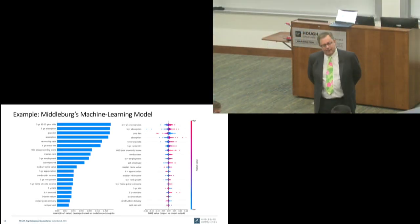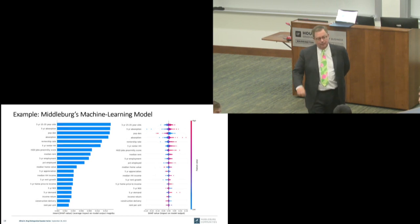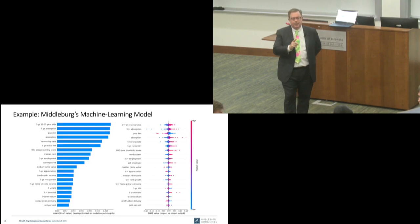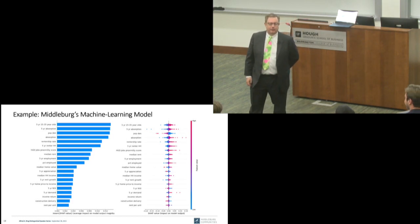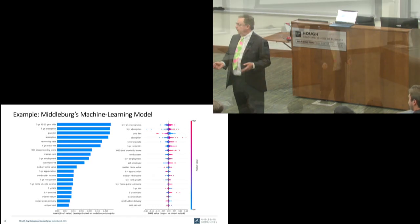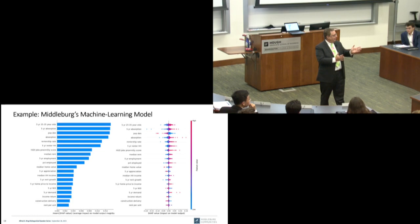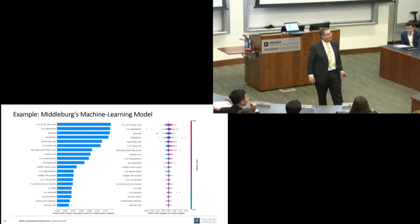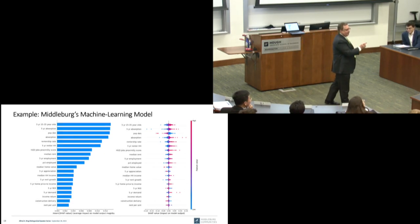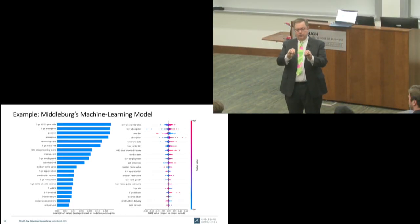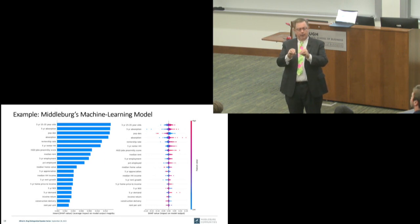A student asks how much weight to place in this model given that past results don't guarantee future success. What we're doing is identifying the locations of other properties recently developed that appear to be successful analogs of what we want to develop, then finding other areas with the same characteristics. That's the goal — find places similar to where successful comparable properties were built.